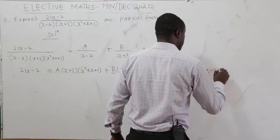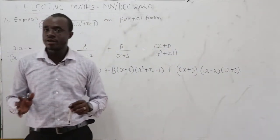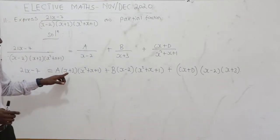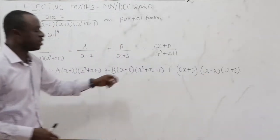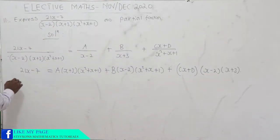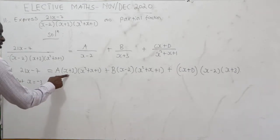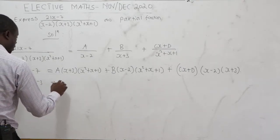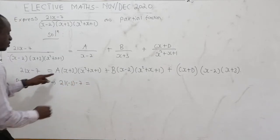Now let's use the cover-up method. When we put x equal to negative 3, the A term and the Cx plus D term will go to zero, allowing us to solve for B. Substituting x equals negative 3 gives: 21 times negative 3 minus 7.